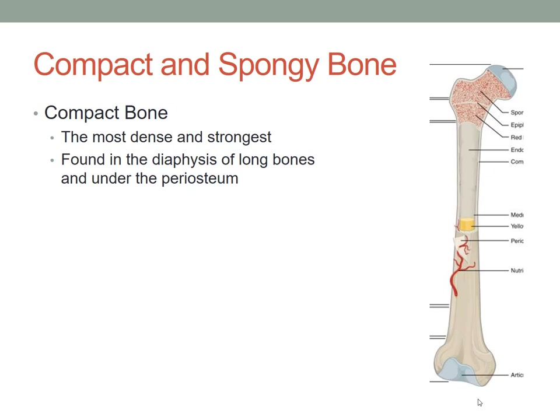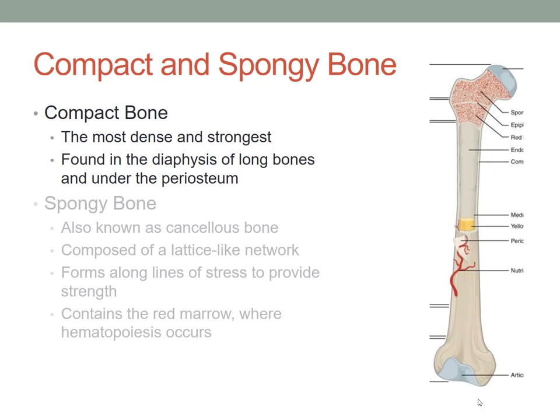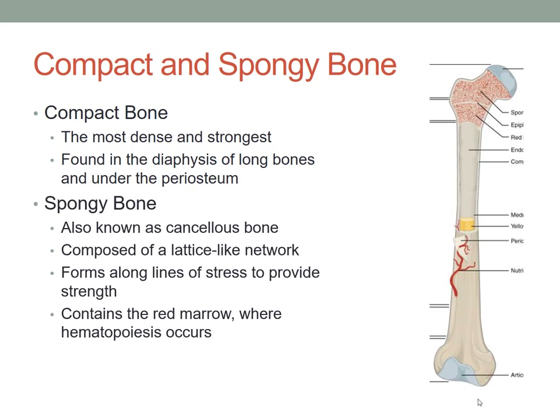Compact bone is the most dense and strongest type of bone. It's found in the diaphysis of long bones and under the periosteum. Spongy bone is also known as cancellous bone — those two terms mean the same thing. They are composed of a lattice-like network, form along lines of stress to provide strength, and contain the red marrow where hematopoiesis occurs — the process by which red blood cells are made to keep the body in a state of hemostasis.